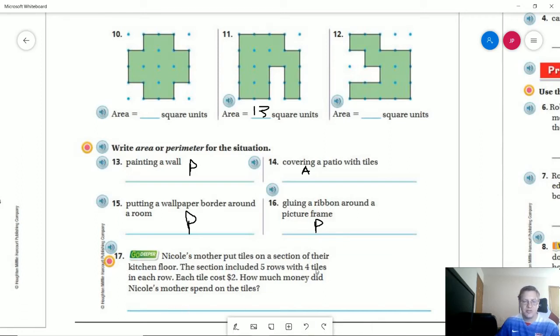For number seventeen, we can do five times four to get twenty, and that's going to give us twenty tiles. And so twenty times two would give us the amount each of those, or the total amount that those tiles cost, and that would give us forty dollars.